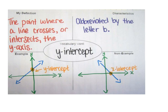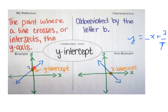The y-intercept is the number at the end — the number being added or subtracted. Its definition is the point where a line crosses or intersects the y-axis. We often use the letter B to represent the y-intercept. So if a line was crossing the y-axis at two, then there would be a two in the equation. Make sure you're looking at where it crosses the y-axis — not the x-axis, which would not be correct.